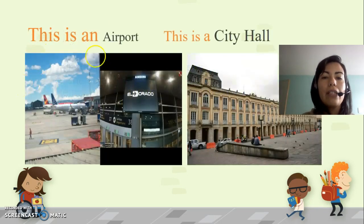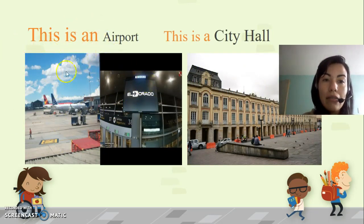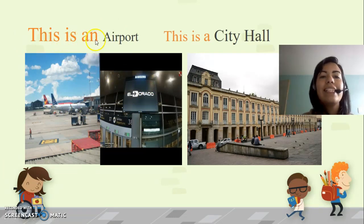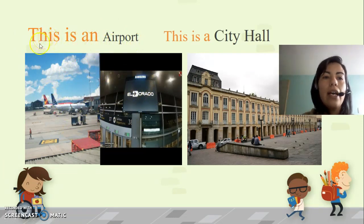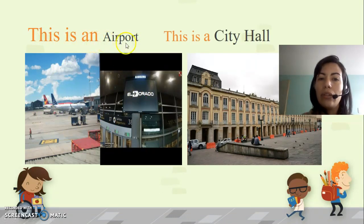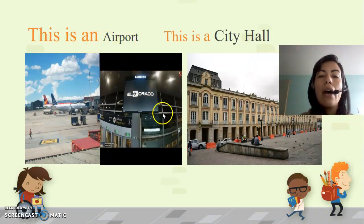For example, if someone asks me 'What is this?' I will say 'This is an airport.' Si alguien me preguntara '¿Qué es esto?' Yo diría 'Este es un aeropuerto.' For example, here in Bogotá we have El Dorado Airport.